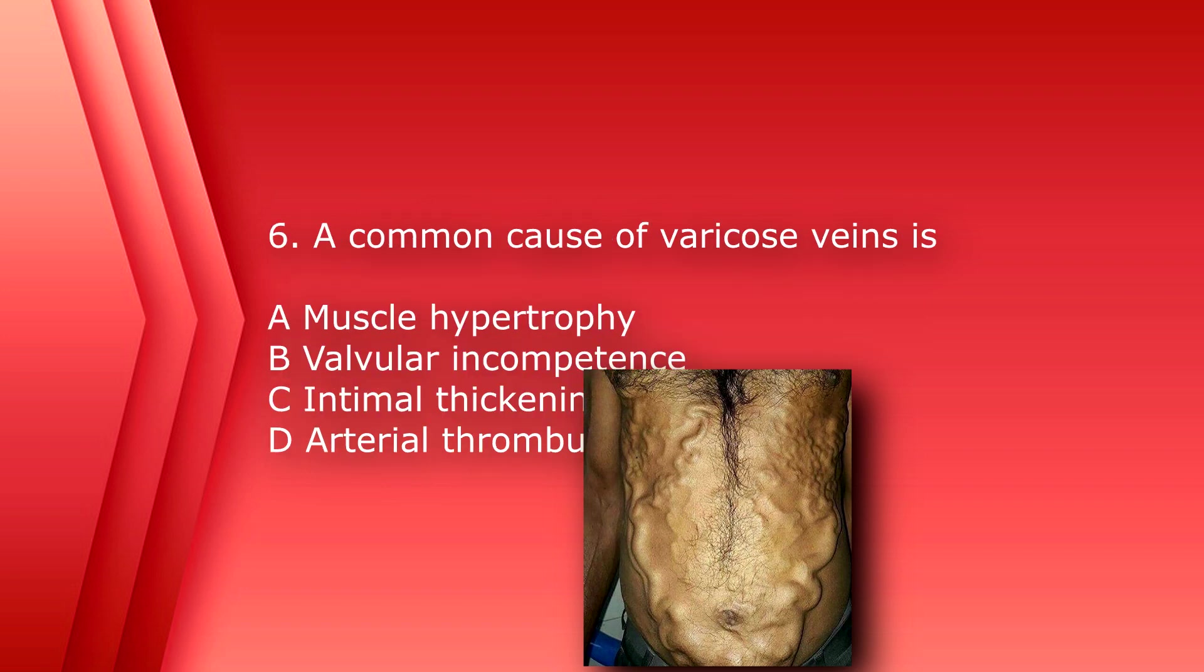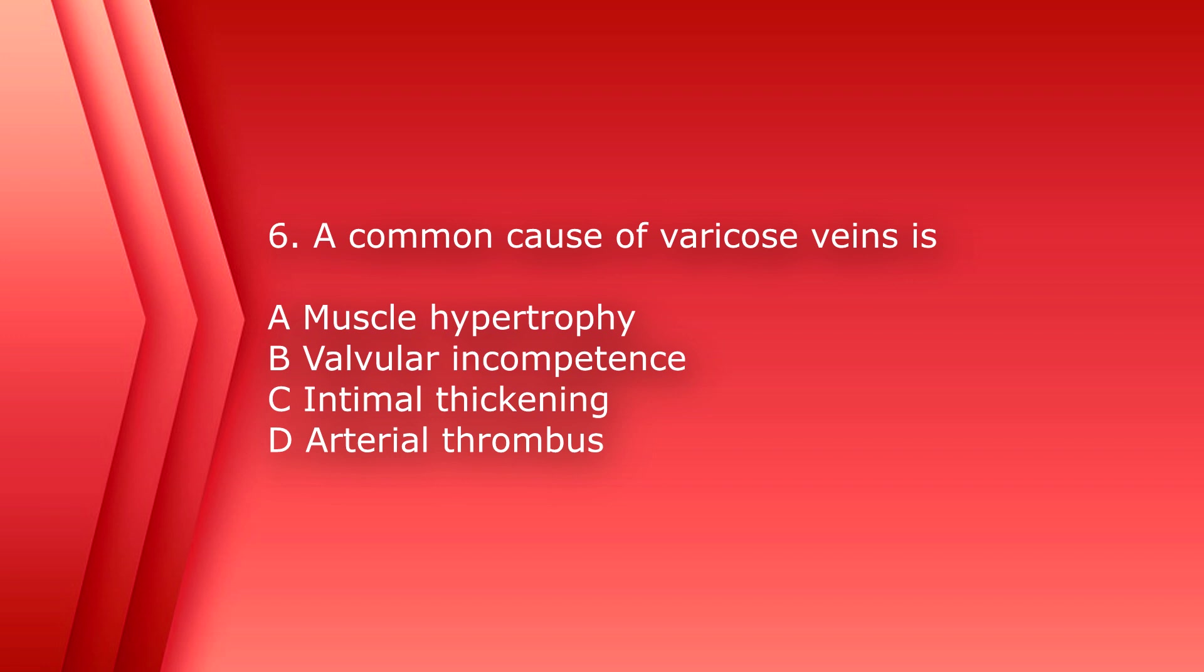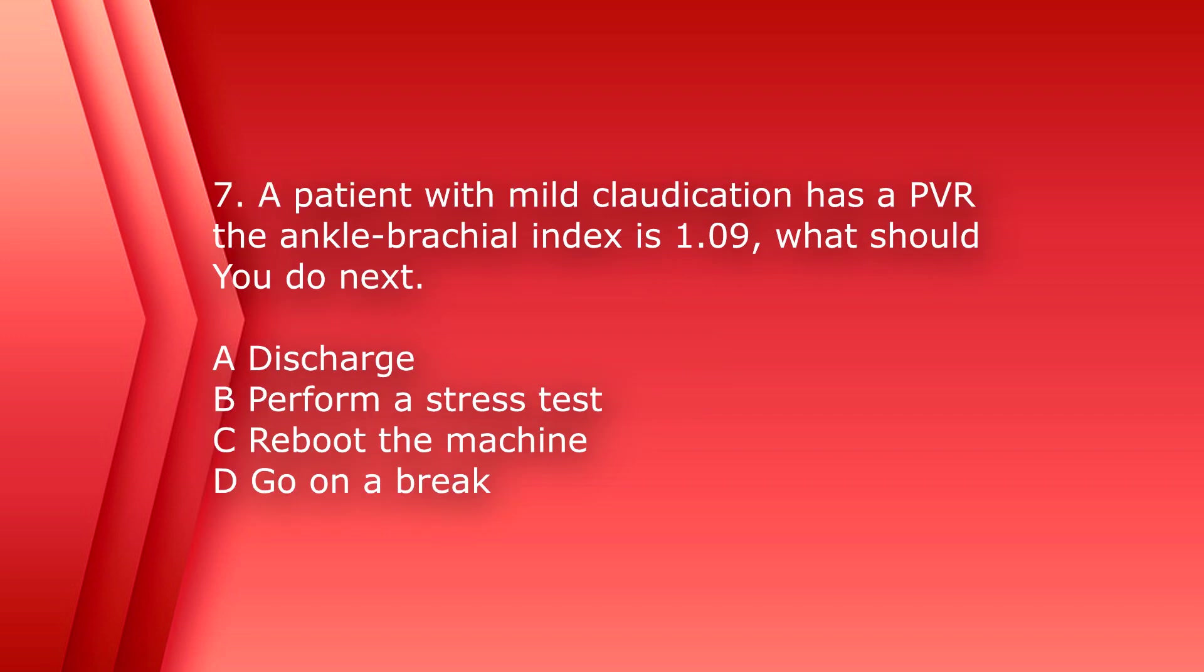Number six. A common cause of varicose veins is A, muscle hypertrophy, B, valvular incompetence, C, intimal thickening, or D, arterial thrombus. The answer is B, valvular incompetence.